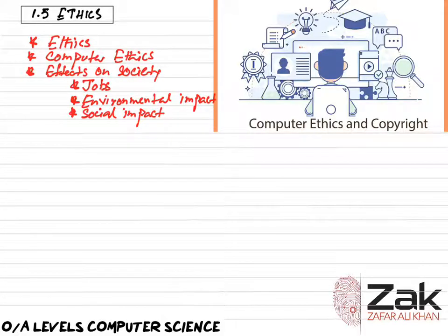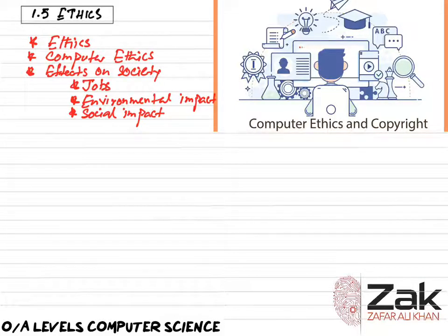Computer technology helps the government in improving services to its citizens. Advanced databases can hold huge amounts of data being collected and analyzed by the government. Computer technology also aids businesses by automating process reports and analysis.